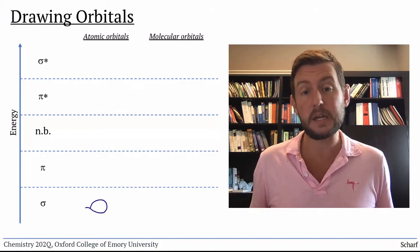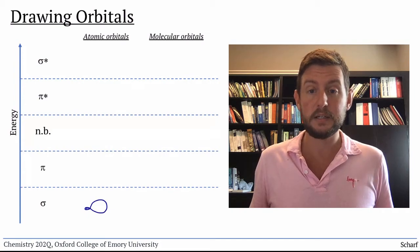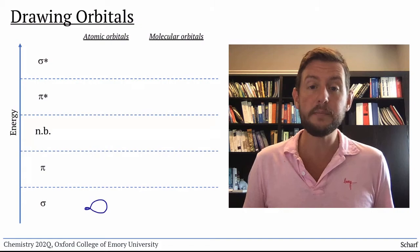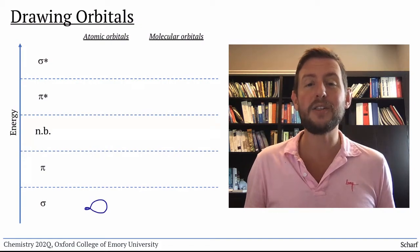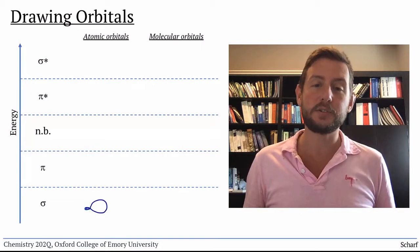Whether they're sp, sp2, or sp3 hybridized, they have one large lobe pointed toward another atom, and a little tiny lobe, I call it a vestigial nubbin, pointed in the opposite direction.